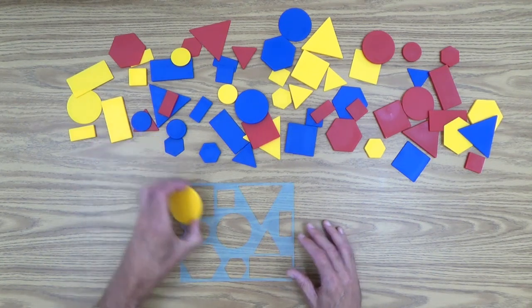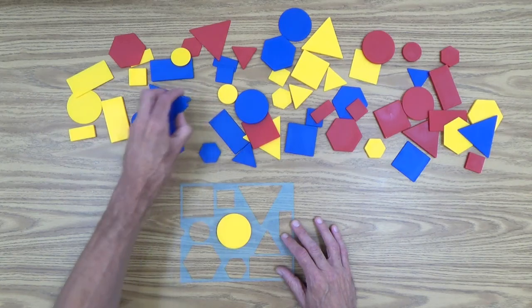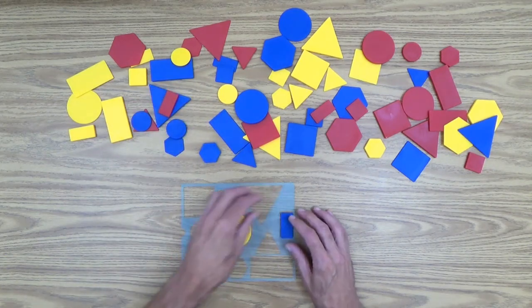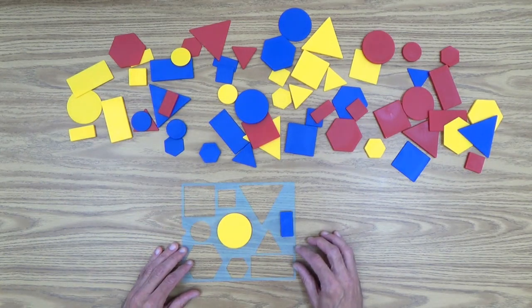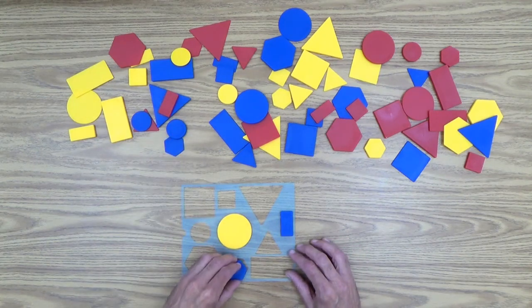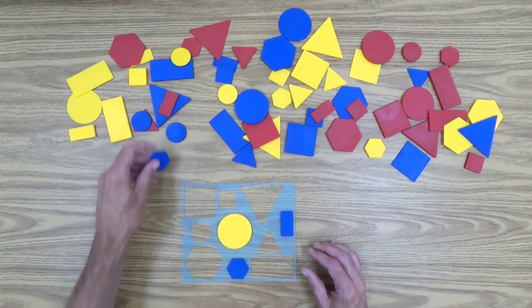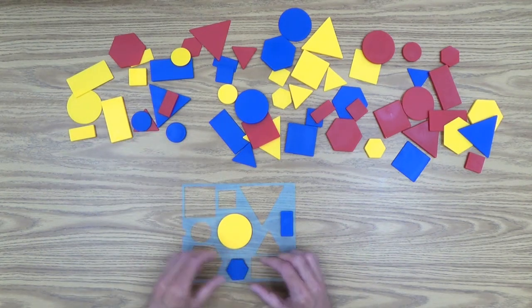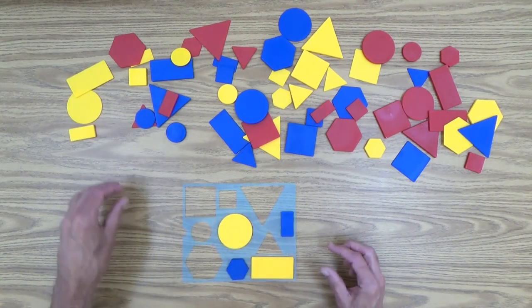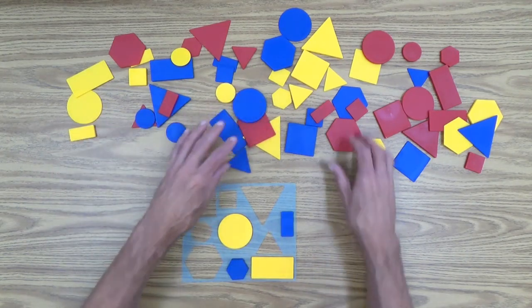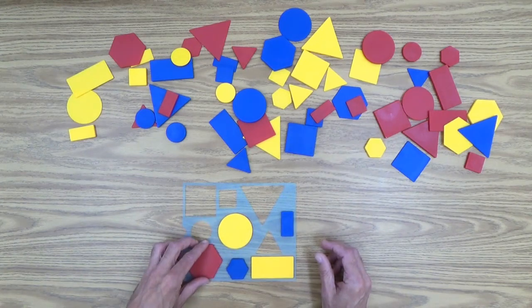As you can see, you just pick things out of the big pile here and place them where they belong in the template. And of course, once you get two of something, you start stacking them up. And I won't go too far with this, but you can see where I'm going here.